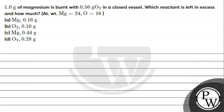Let's read this question. 1 gram of magnesium is burnt with 0.56 gram of oxygen in a closed vessel. Which reactant is left in excess and how much? The atomic weights of magnesium and oxygen are given.